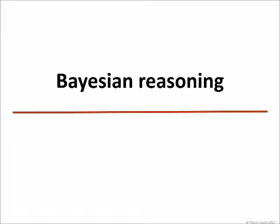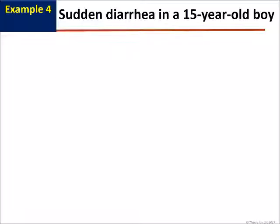To give you a simple example of a Bayesian reasoning, let's take an example, a little simplistic, but which shows how to take into account probabilities in a Bayesian type of reasoning. A young teenager is brought to the doctor by his parents for a sudden onset of diarrhea. This boy is otherwise in good health. What are the diagnostic hypotheses?